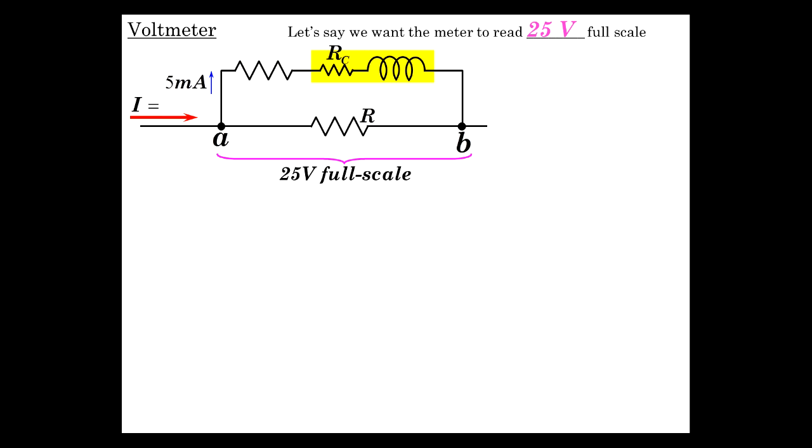Okay, now we're going to build a voltmeter. Let's say that we have the same basic meter that we had for the ammeter example, and we want the meter now to read 25 volts full scale. So it's going to be a voltmeter that when placed across an element measures the potential difference, and if it reads full scale it should be 25 volts corresponding to that.